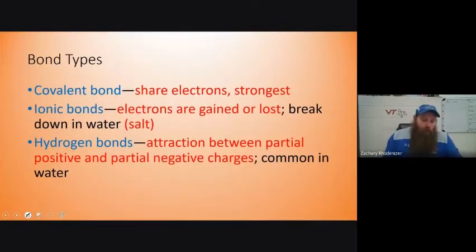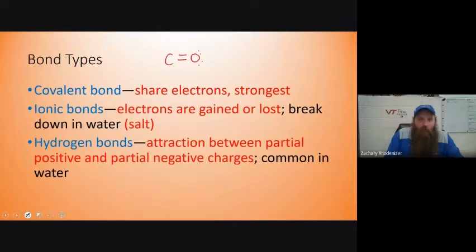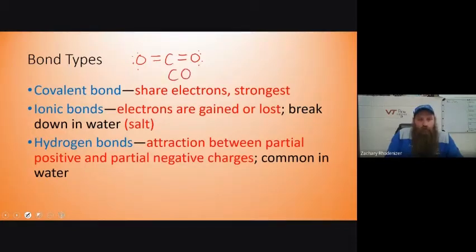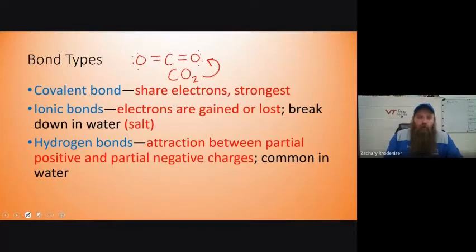A couple of bonds we'll talk about throughout the year. Covalent bonds are when we share electrons. Carbon dioxide is a great example — it's a linear molecule, carbon in the middle, two oxygens on the end. That's the Lewis diagram for carbon dioxide: one carbon (C), two oxygens (O2), so that's CO2. Covalent bonds are really strong bonds.